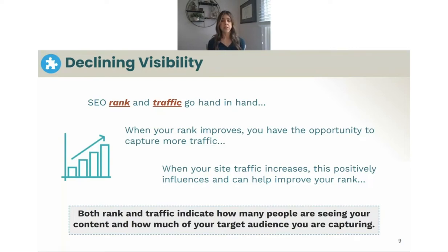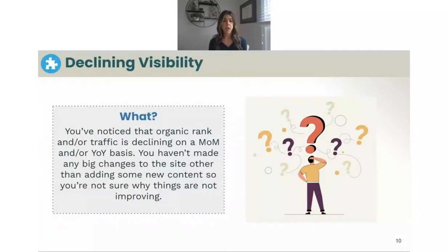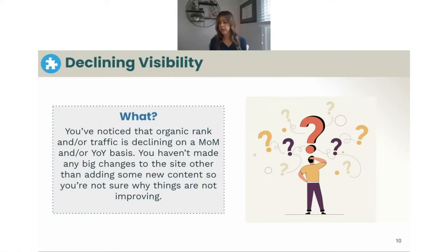A lot of the tactics go hand in hand as well. Overall, both rank and traffic indicate how many people are actually seeing your content and how much of your target audience you're capturing — your impression share, how much of that search landscape you're actually getting. The problem you may be experiencing is that your organic rank and/or traffic has declined on a month-over-month or year-over-year basis, even though you haven't made big changes — maybe just adding a couple of new pages — and you're not sure why things are getting worse.